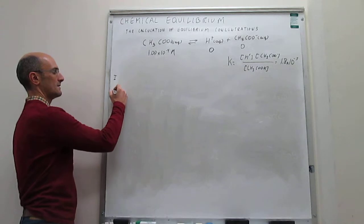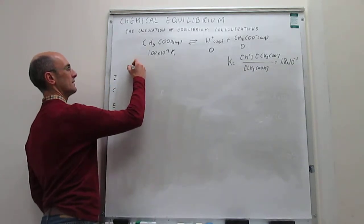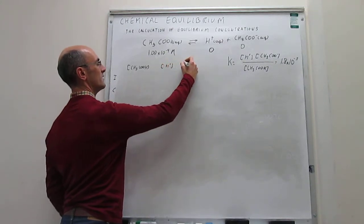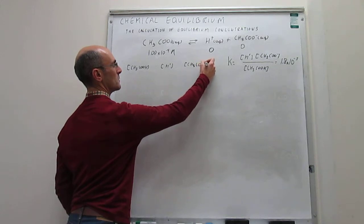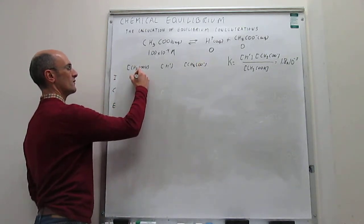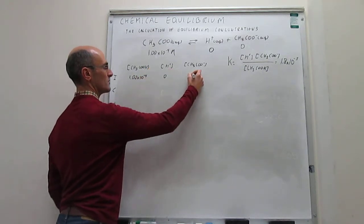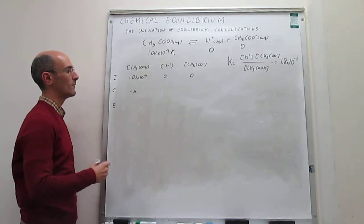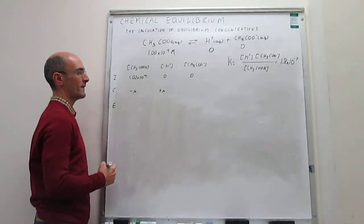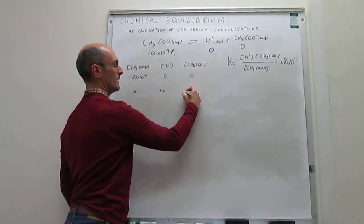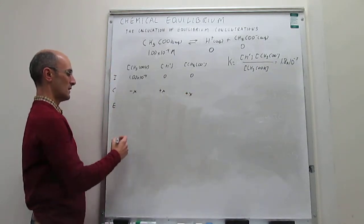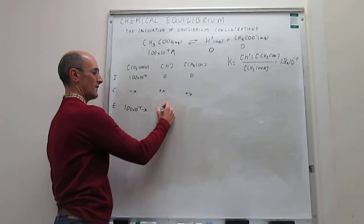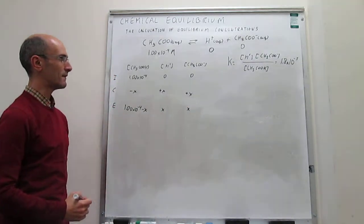Let's build the ICE diagram with this data. The initial molar concentration of acetic acid is 1.00×10⁻⁴, with no protons and no acetate initially. The change is an unknown amount x — the concentration of protons grows by x and the concentration of acetate grows by x as well, since the stoichiometric coefficients are all one. At equilibrium, acetic acid is the initial value minus x, while both protons and acetate equal x.